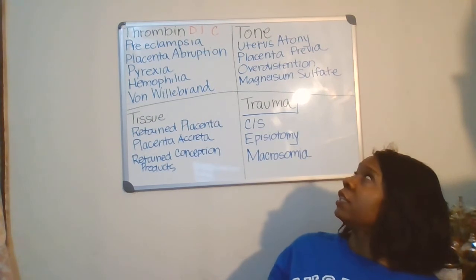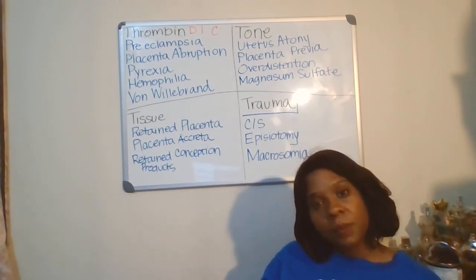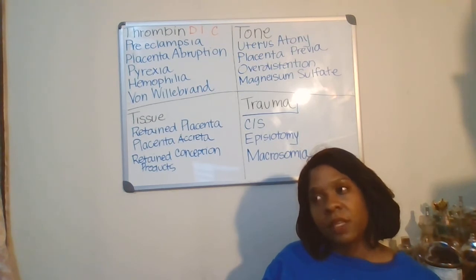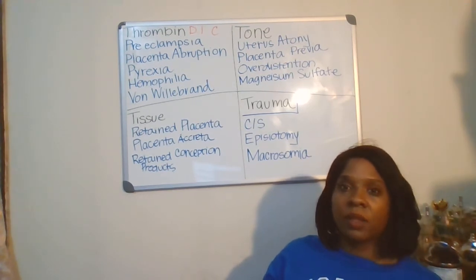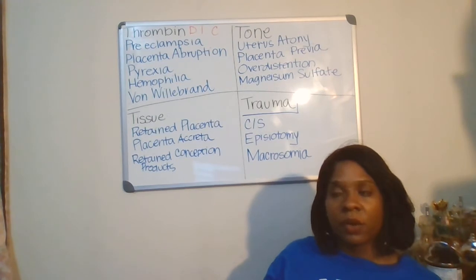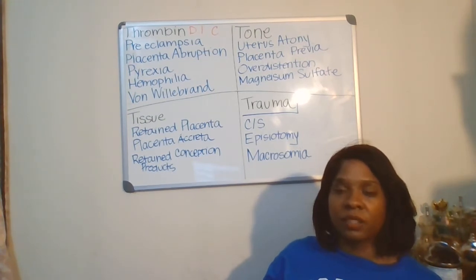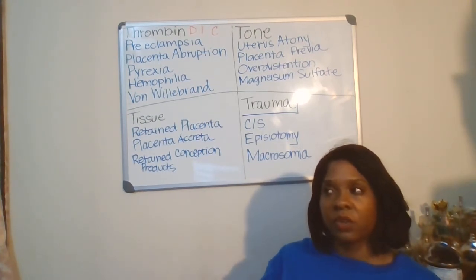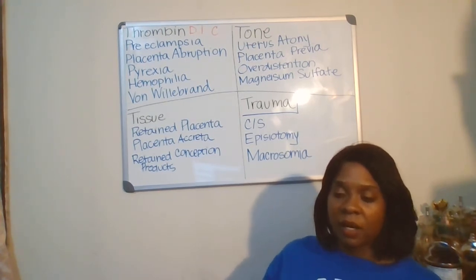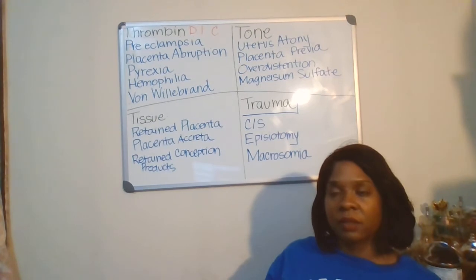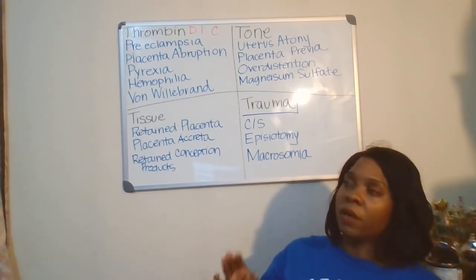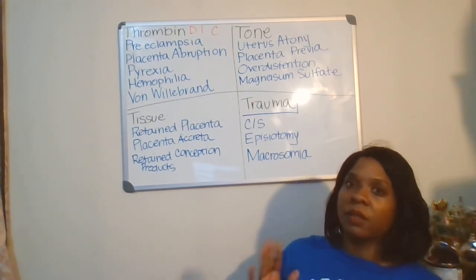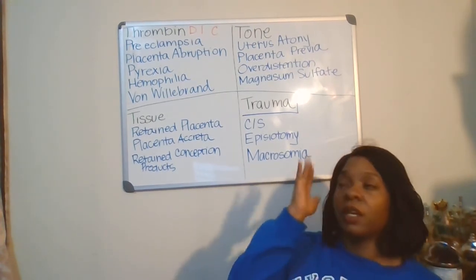Another issue in regards to tone is placenta previa. Placenta previa is a condition where the placenta for some reason decides to implant in the lower segment of the uterus. Usually they find it early on, but during contractions — if contractions start at the lower segment of the uterus when the baby's about to come out — it can create little micro tears, which can cause bleeding and can injure the endothelial layer of the uterus.